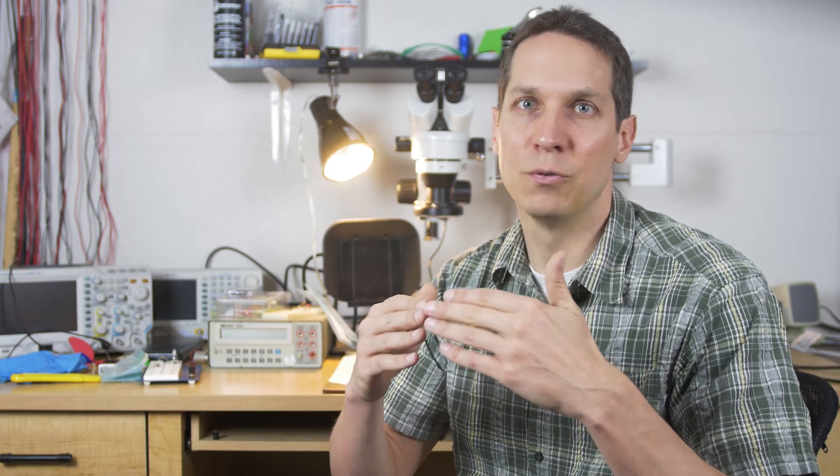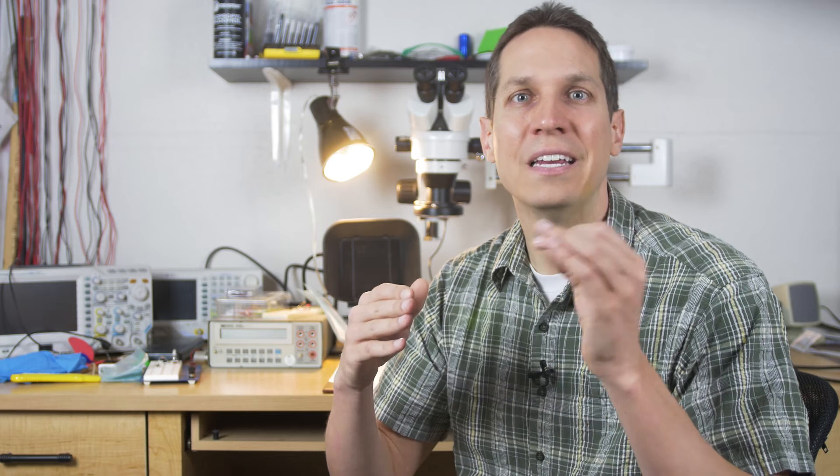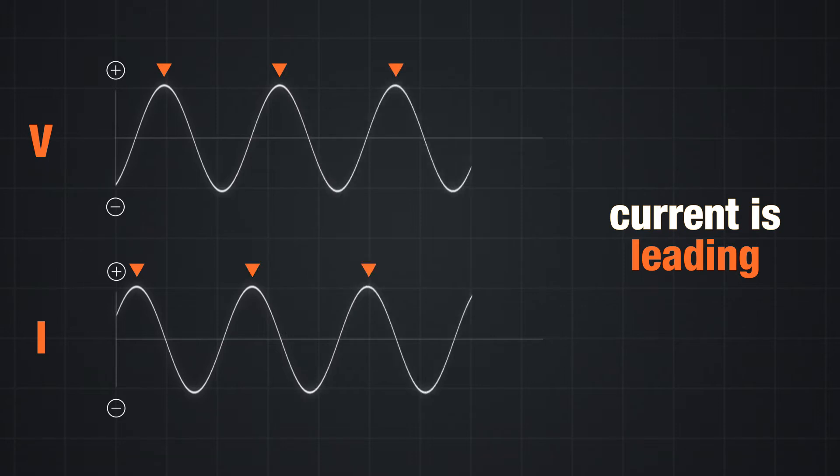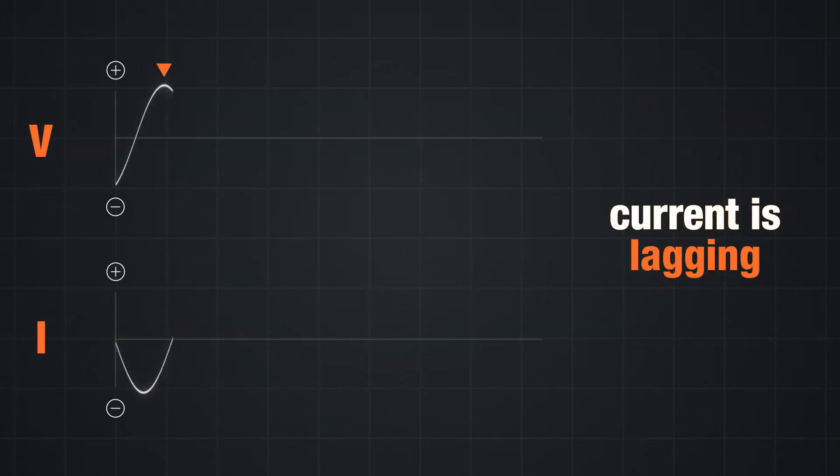But for reasons that we'll explain in a later video, an inductive or capacitive load can cause your current to lead or lag behind the voltage.